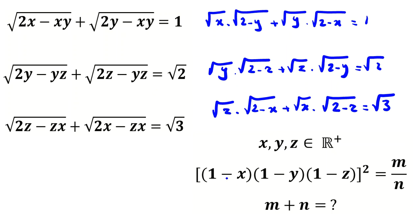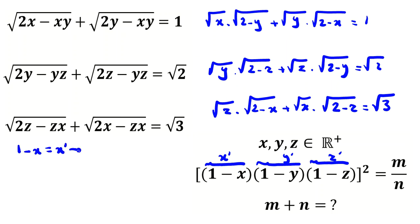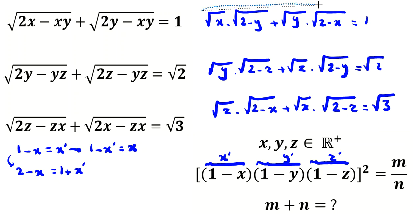For these problems, consider a substitution. Let x' represent a transformed variable such that x = 1 - x' and x' = 1 - x. Similarly for y and z. We also note that 2 - x equals 1 + x'. So the product of x and (2 - x) equals 1 - x' squared. This substitution will simplify the expressions nicely.